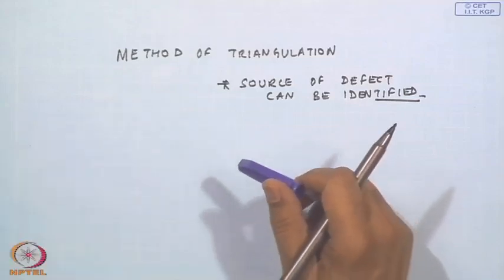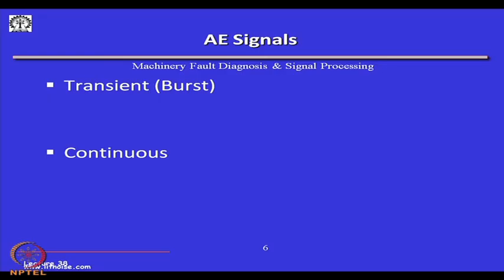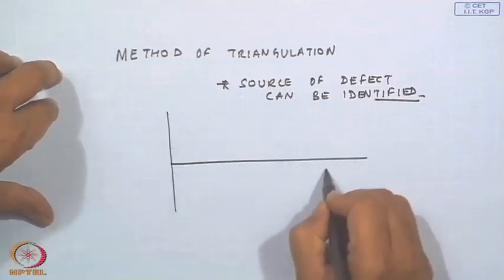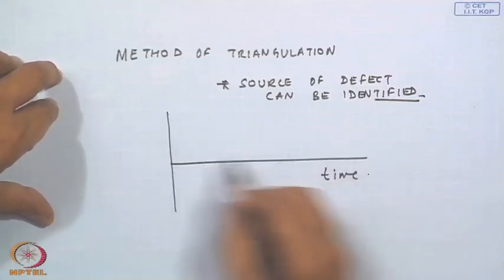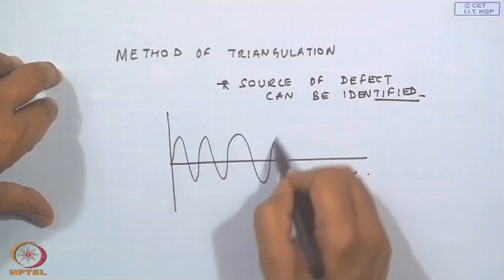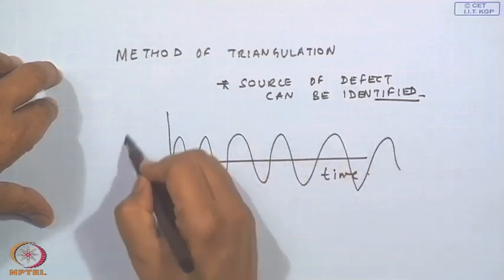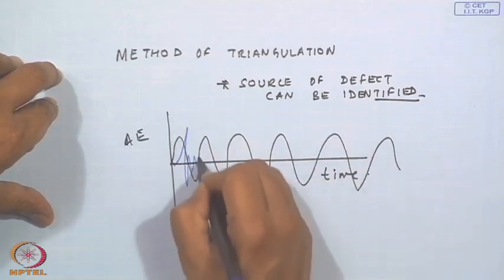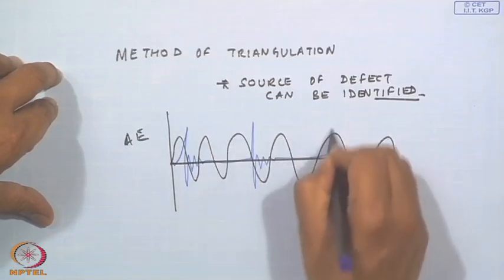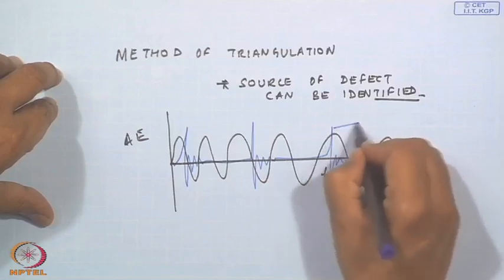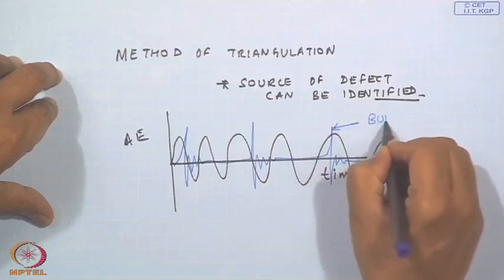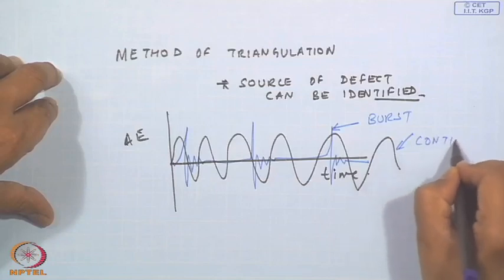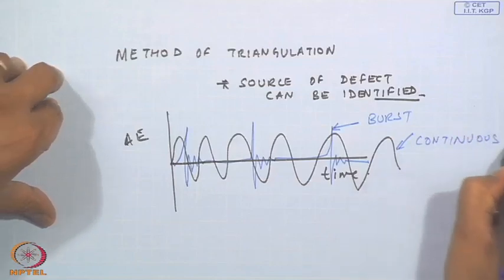These signals are in the time domain and are very high frequency. They could be continuous AE signals or they could be in bursts — so burst or continuous signals.